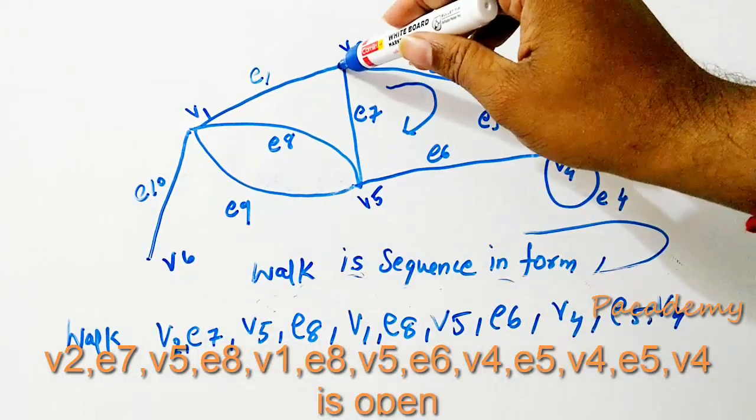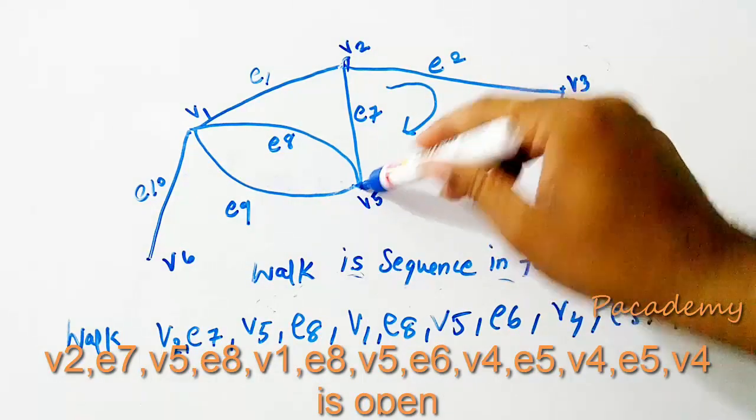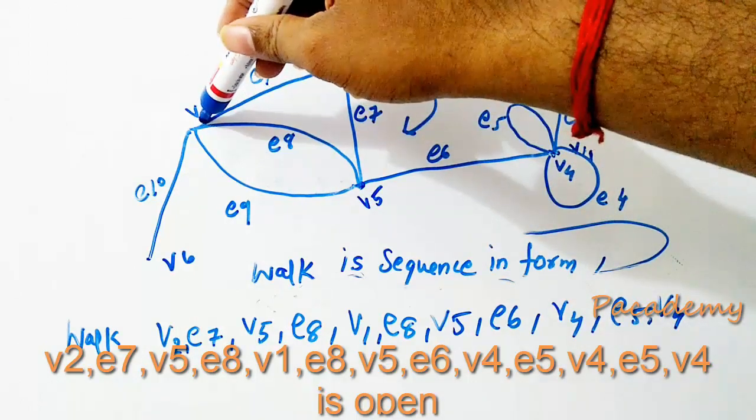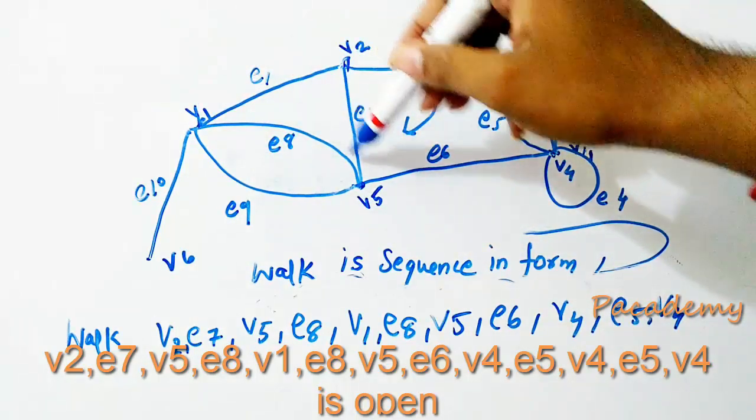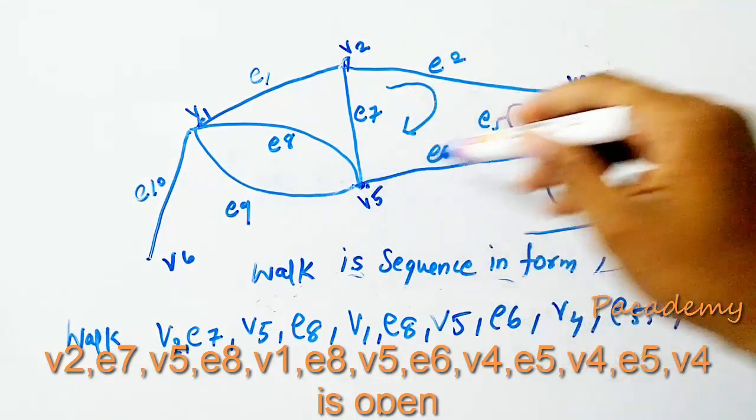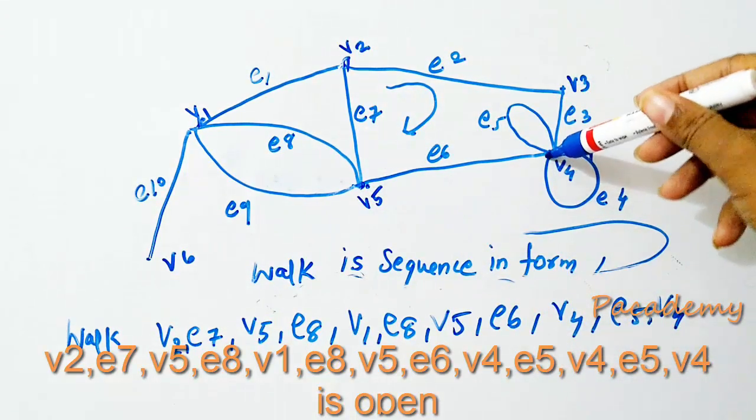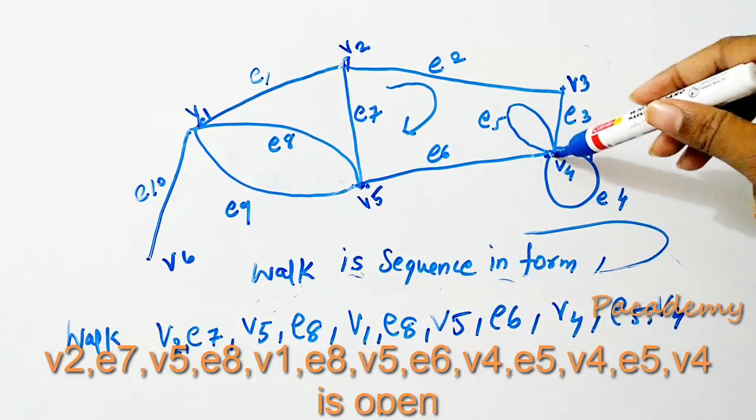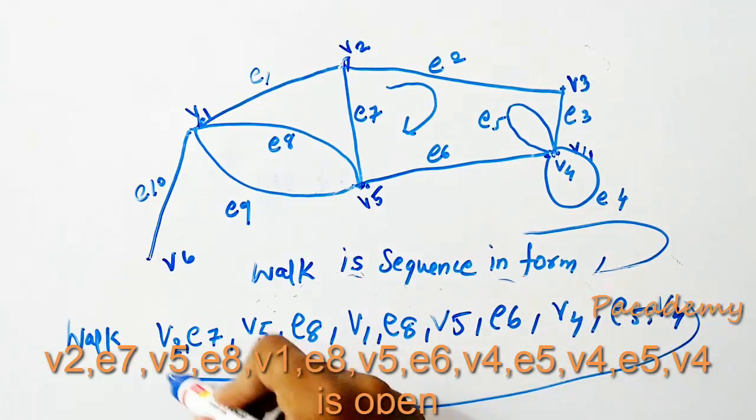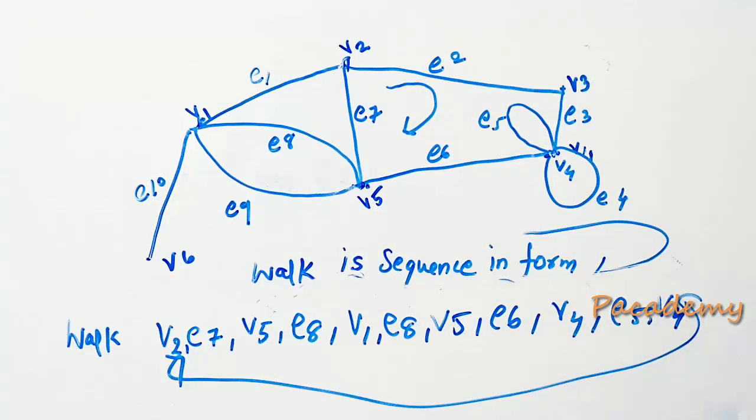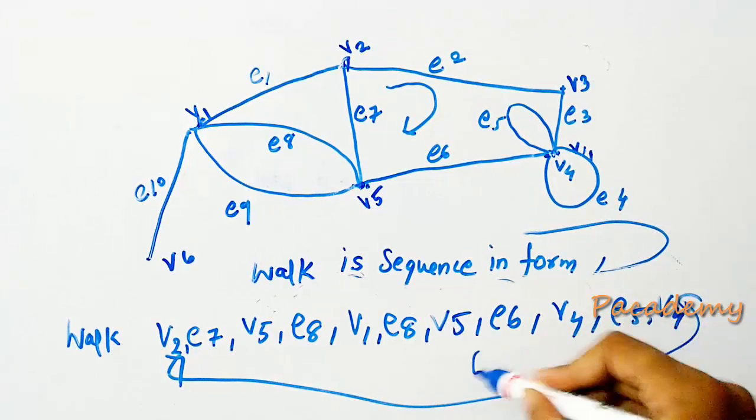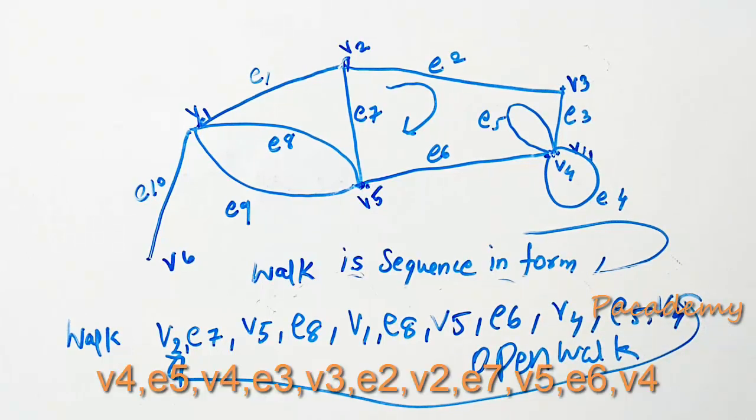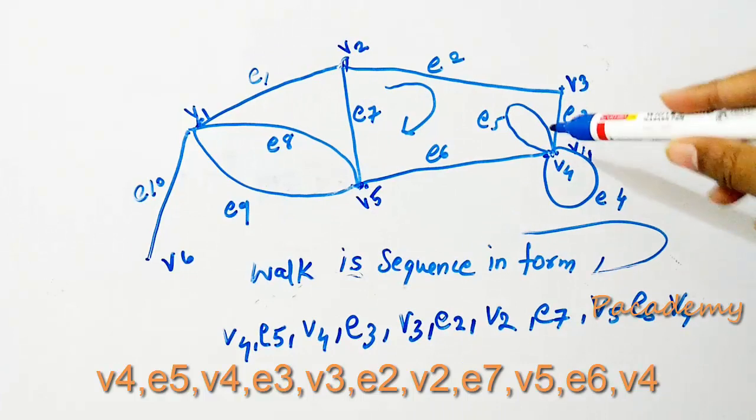A walk starting from v2, going to e7, then from v5 to e8, and then again from e8 to v5, and from v5 to e6, and from v4 to e5, and back to v4. The starting and ending vertices of this walk are not the same, so this is an open walk.